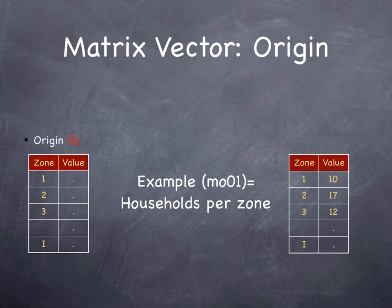Origin vectors are just a column of data. Each cell is indexed by the Transportation Analysis Zone, or TAZ. An example might be the number of households in a zone, which of course is important to estimate the total number of trips a zone generates.